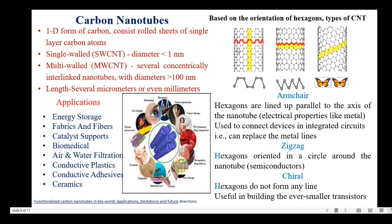Based on the orientation of hexagons, single-walled carbon nanotubes are of three types: armchair, zigzag, and chiral. In the armchair type, the hexagons are lined up to the axis of the nanotube and their electrical properties are like metals — these are used to connect devices in integrated circuits, replacing metal lines. In the zigzag type, the hexagons are oriented in a circle around the nanotube and their electrical properties are like semiconductors. In the chiral type, the hexagons do not form any line and they are useful in building ever-smaller transistors.